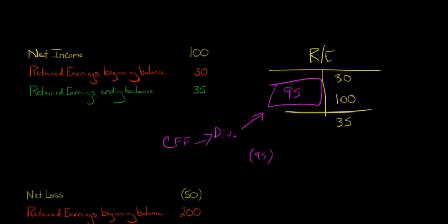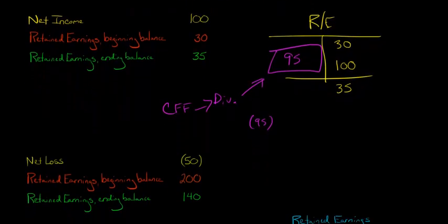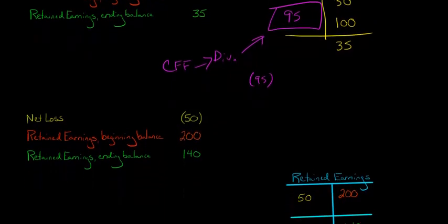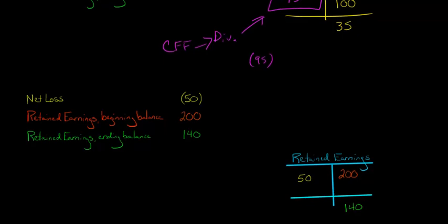Now let's leave that aside. I want to show you an example where we start with a net loss. So instead of having net income, we're going to have a net loss, and then we'll calculate the dividend. Let's say that our beginning balance of retained earnings is $200, and I've set up a T account here. So we start with $200. The ending balance is $140.